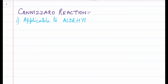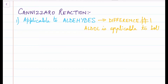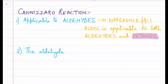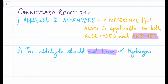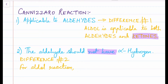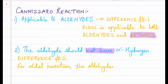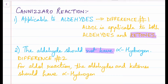The first thing you need to know about Cannizzaro reaction is that it is applicable only to aldehydes — that is your first difference between aldol and Cannizzaro. Aldol reaction is applicable to both aldehydes and ketones, but Cannizzaro reaction is applicable only to aldehydes. Also, there is one condition: there should be no alpha hydrogen present in the aldehyde for it to perform Cannizzaro. That gives us our second difference, because for aldol reactions you need alpha hydrogens present.